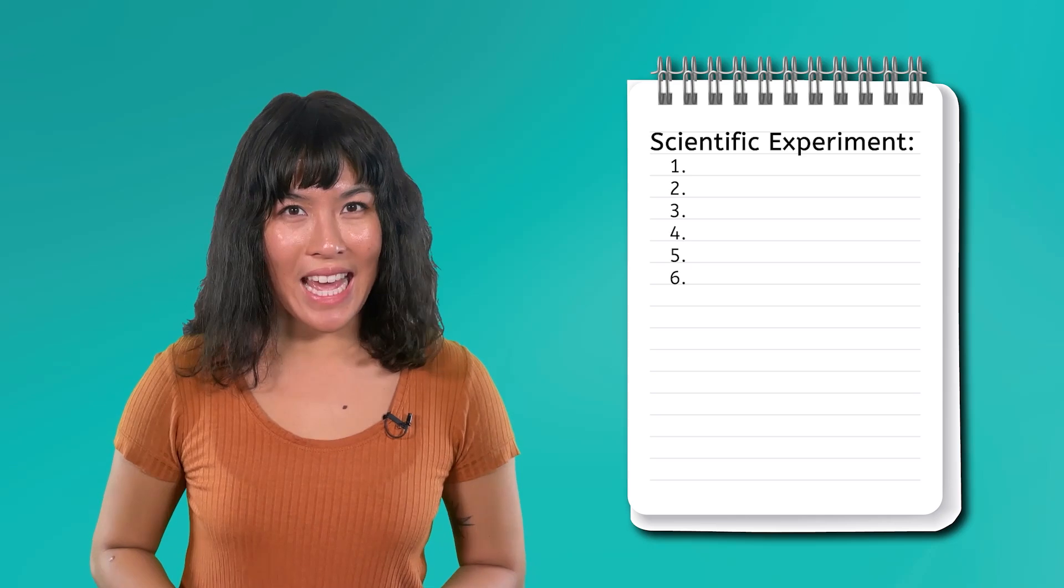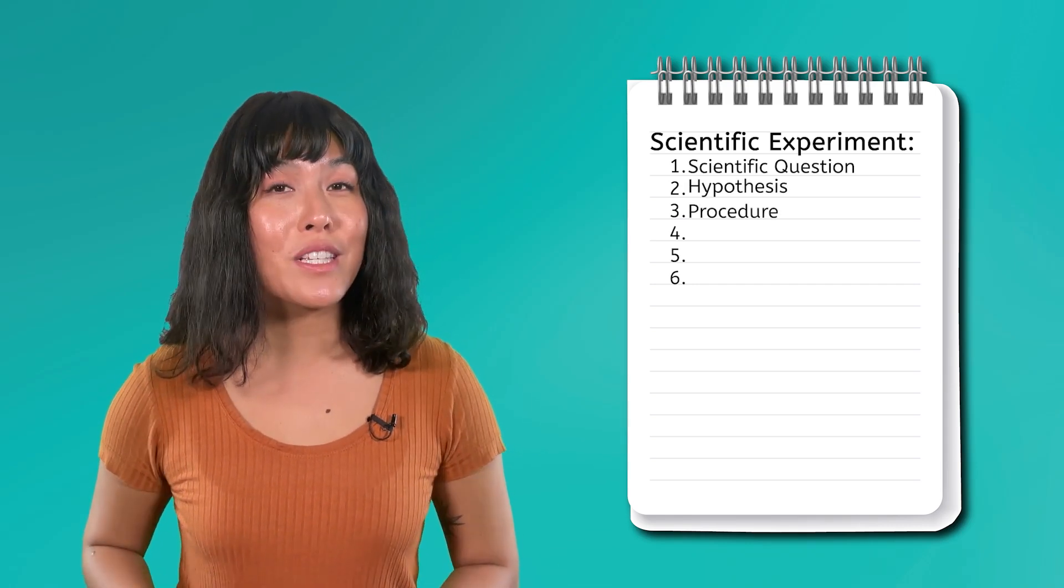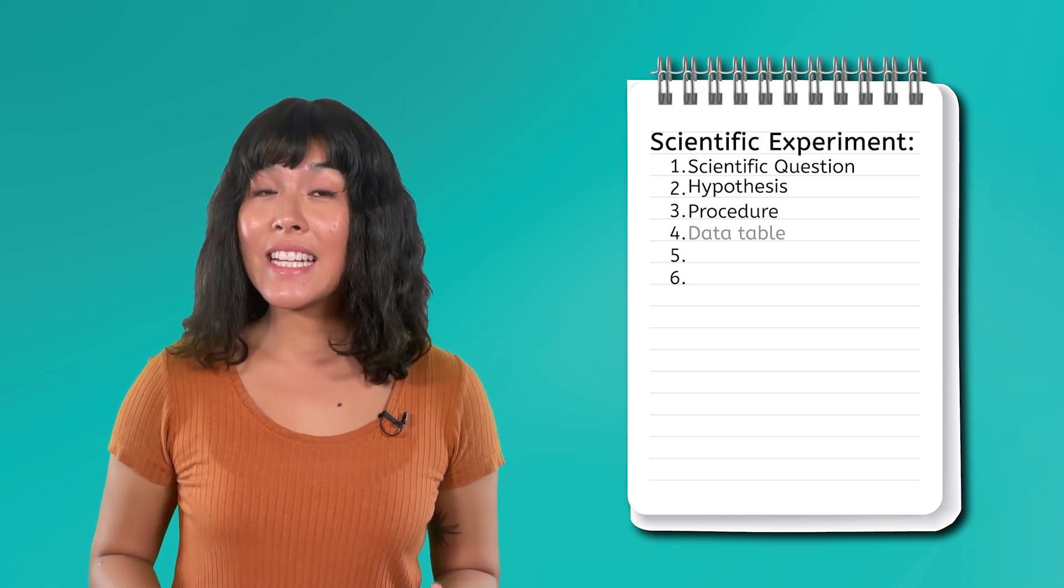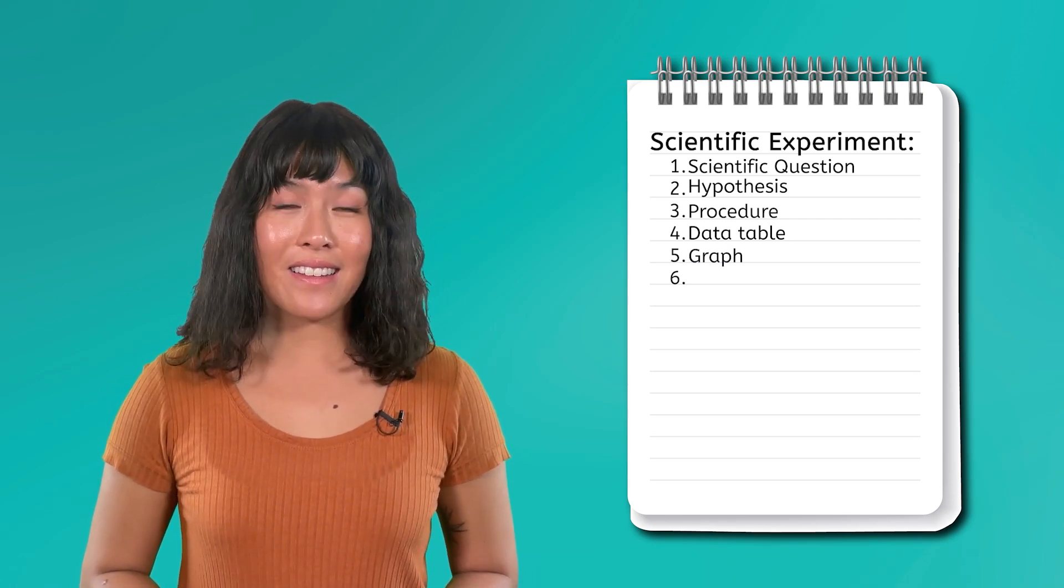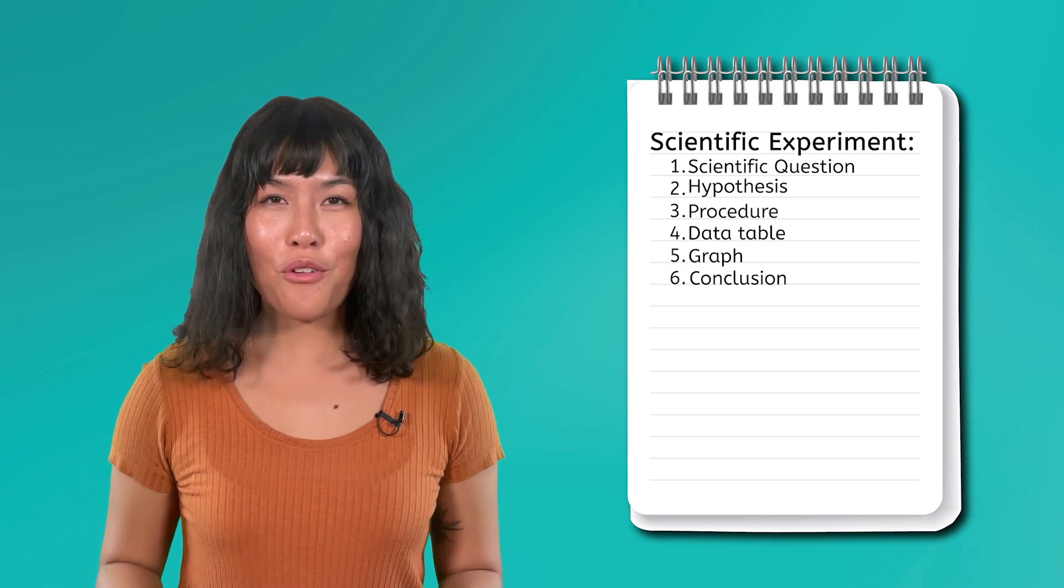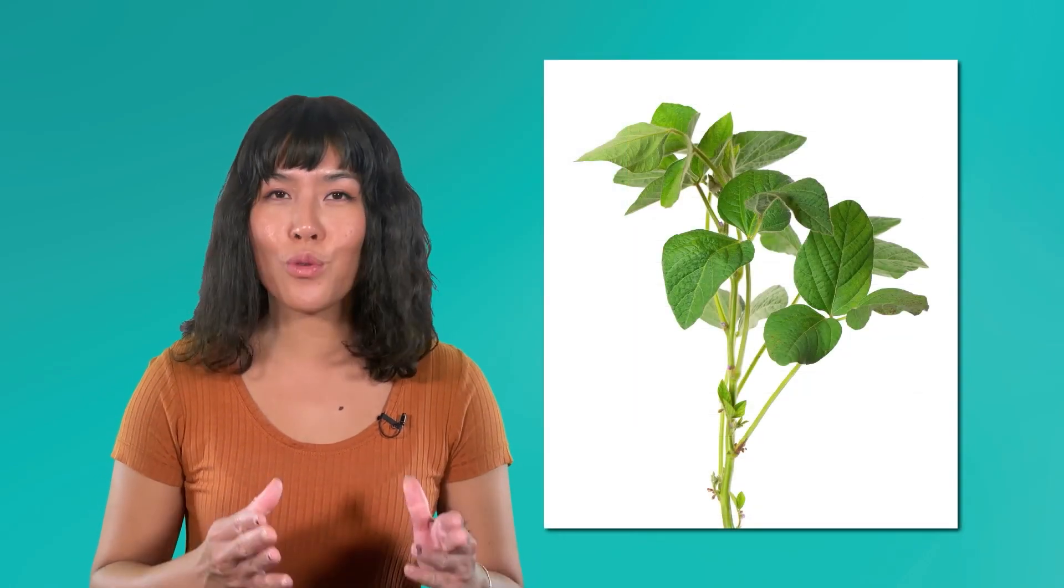As we went through the lesson today, we reviewed how to set up a scientific experiment. Here are the parts you will need: a scientific question, a hypothesis, a procedure with sound experimental design, and a data table to record your results. After gathering data, you may want to construct a graph, which can help you see trends in your data, and make a conclusion. Of course, before you do any of this, you'll need to pick an organism as your test subject and an abiotic factor to test.